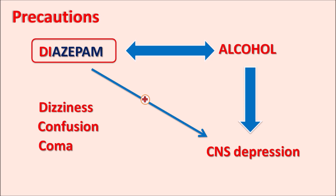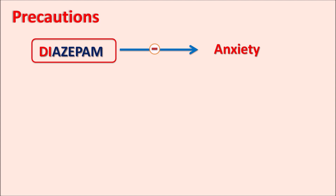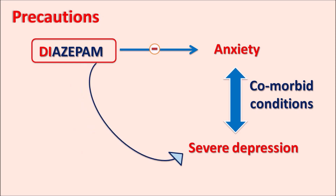Another important precaution: diazepam is used to treat anxiety as an anxiolytic, but if the patient has any comorbid conditions — for instance, if anxiety coexists with severe depression — diazepam can affect the depressive disorder and increase suicidal tendency. Antidepressants like SSRIs can increase suicidal tendency, and when SSRIs are combined with diazepam they can further increase it. Diazepam shows interaction with many antipsychotics and antidepressants such as SSRIs, MAO inhibitors, and TCAs.